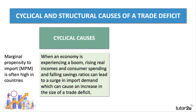A key concept here is the marginal propensity to import — you've probably come across this when you looked at the multiplier, the complex multiplier. In many countries there is a high marginal propensity to import; as spending goes up, a significant chunky percentage of it goes on imported goods and services. Some economists say that the income elasticity of demand for imports is pretty high, particularly for things like finished manufactured goods — a new car, a new smartphone, a TV screen and so on.